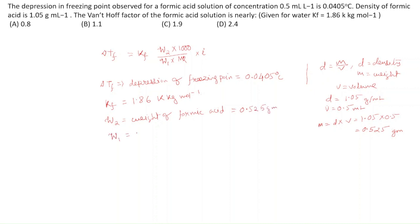W1, the weight of solvent, is 1 liter, approximately 1000 grams. M2 is the molecular weight of formic acid, which is 46. And i is the Van't Hoff factor.